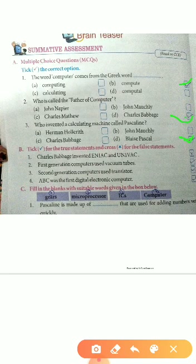Exercise: Tick right for true and cross for false. First — Charles Babbage invented ENIAC and UNIVAC: Wrong. Second — First generation computers used vacuum tubes: Correct. Third — Second generation computers used transistors: Correct. Fourth — ABC was the first digital electronic computer: Correct.